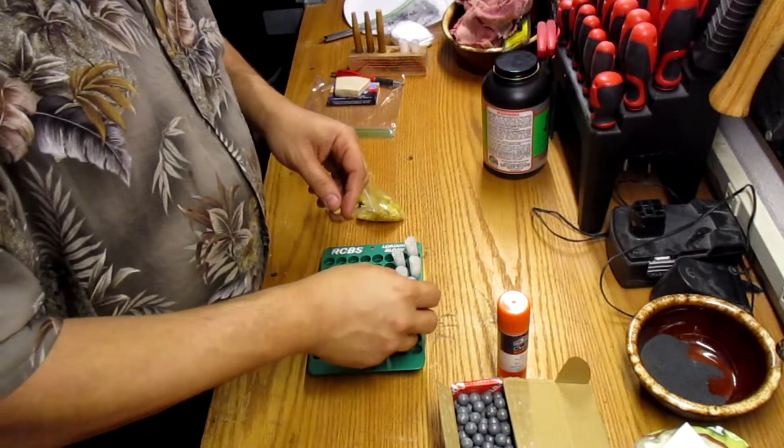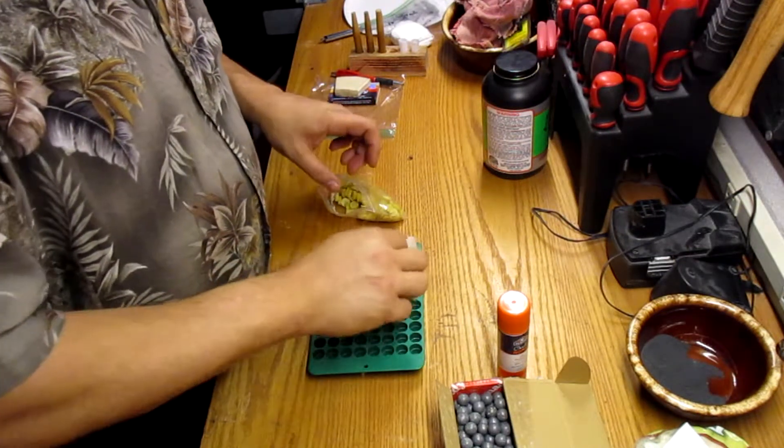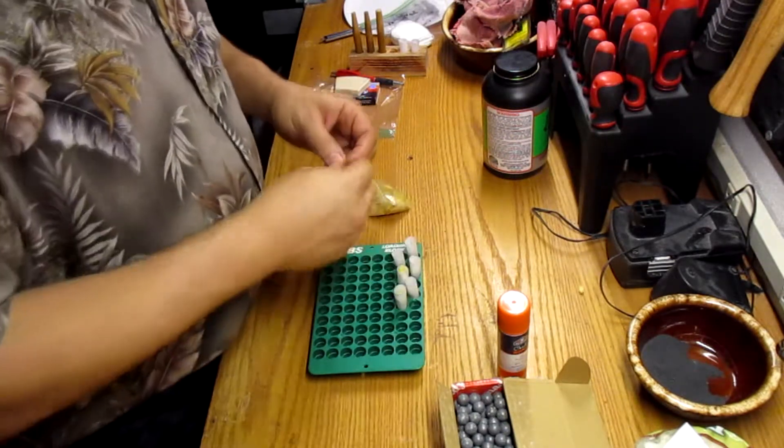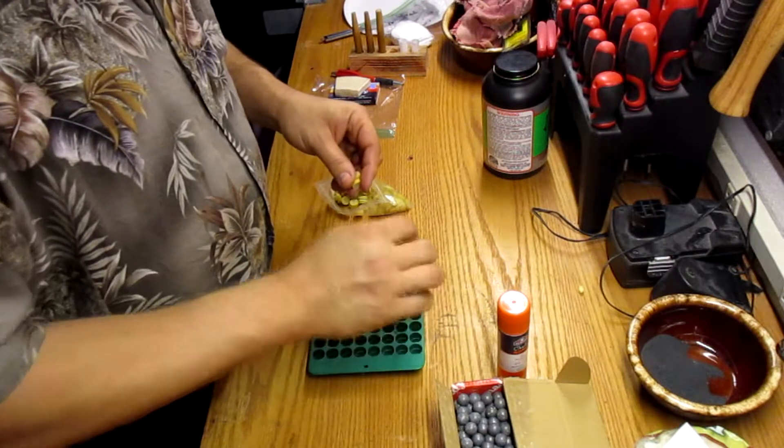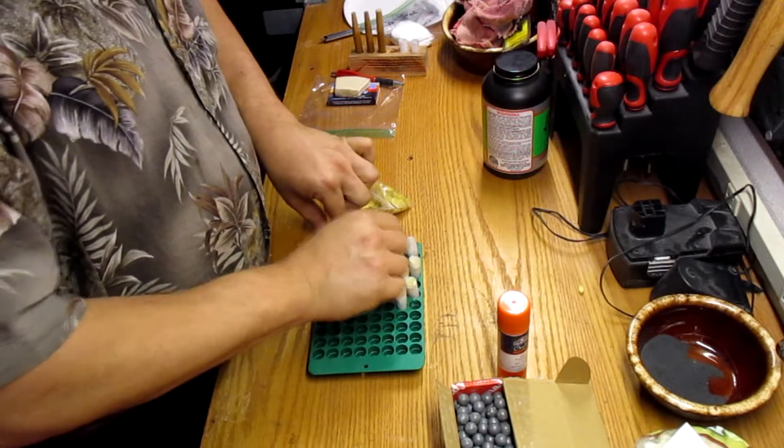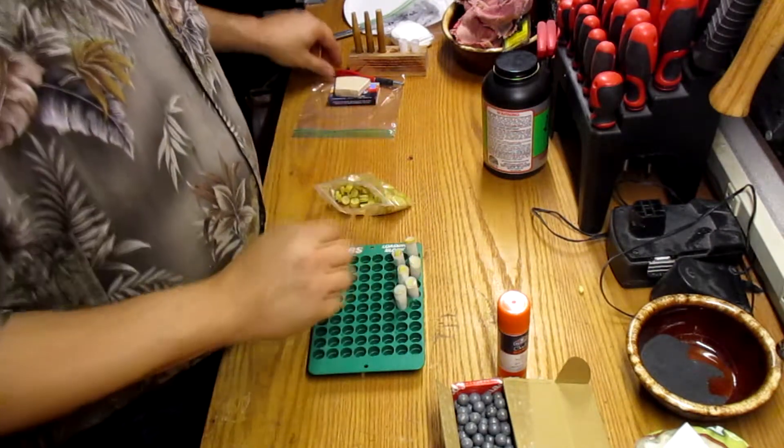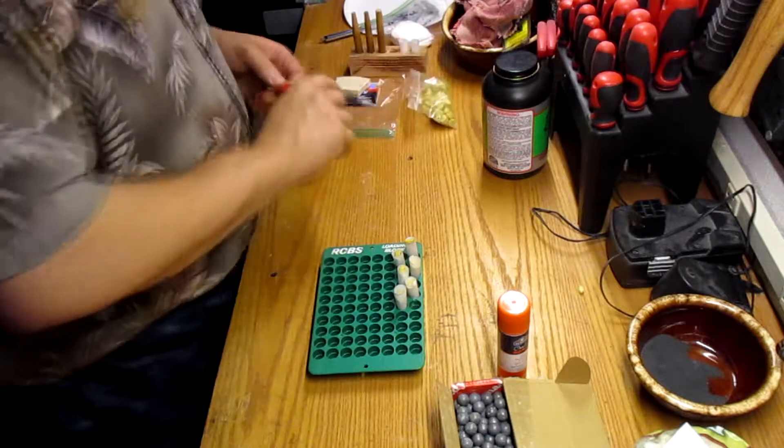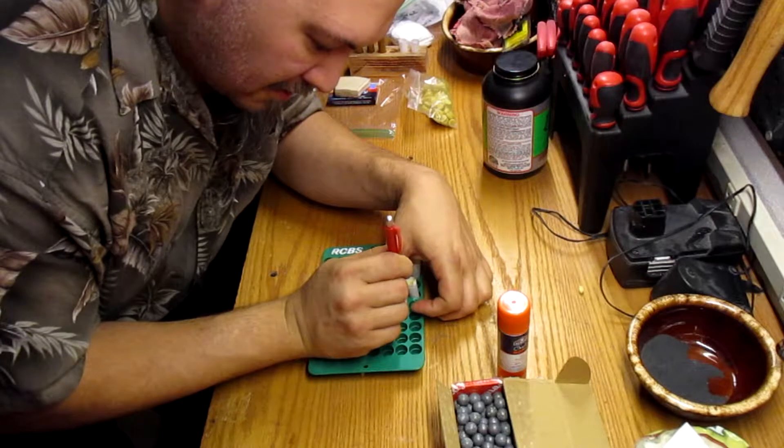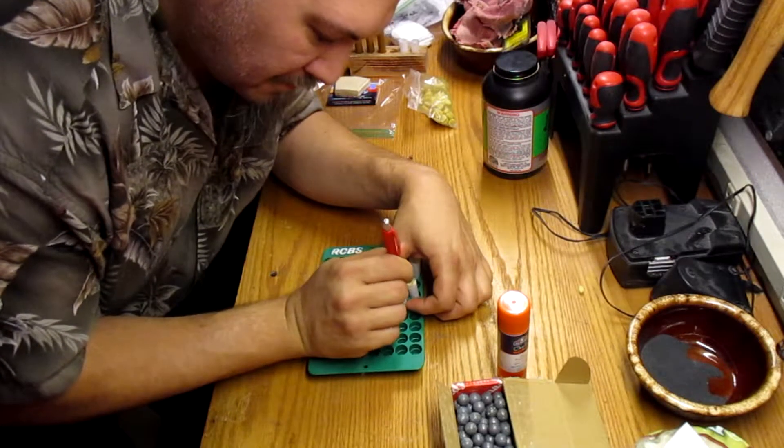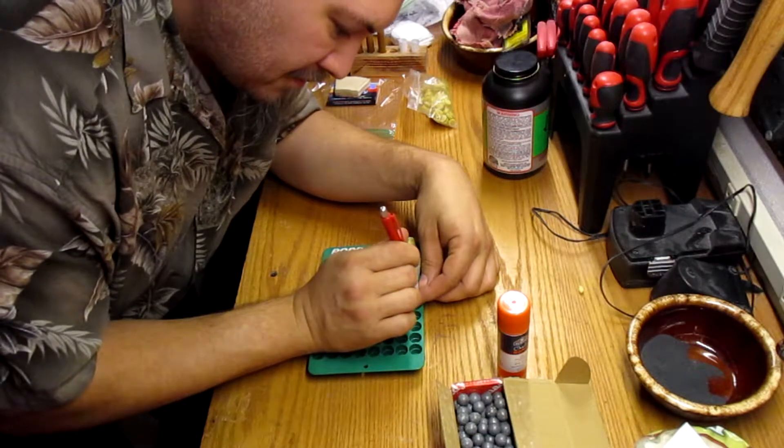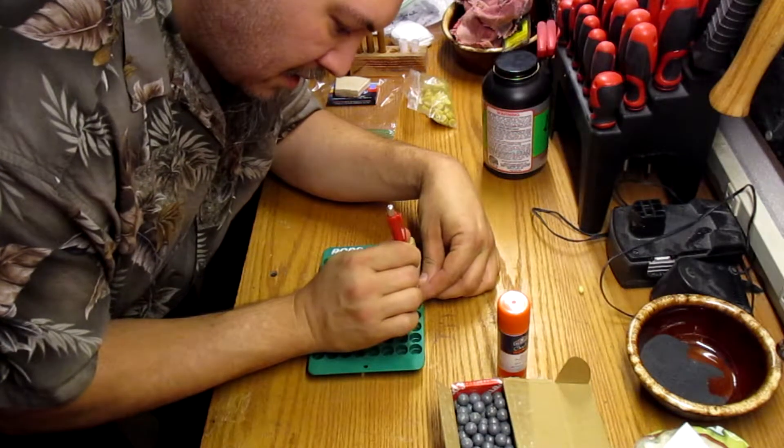So what I'm going to do is take a pre-lubricated wad, and you'll notice these ain't exactly going in straight. That's okay. They have to be set down on the powder anyway. Oh, I almost dropped that one. So what I generally do is once I get them in there, just use my pen to flatten them out, directly onto the powder charge. Push it down, get it in there.